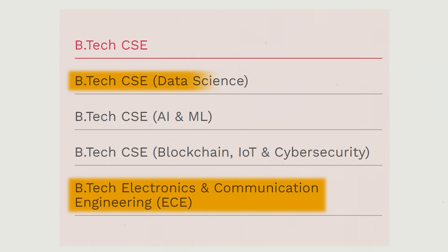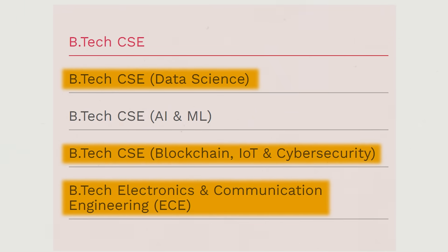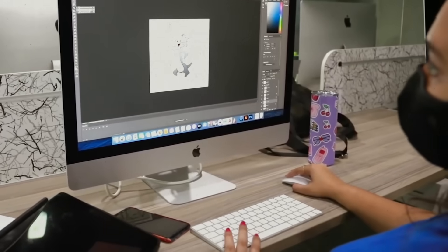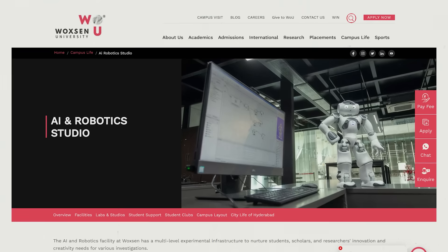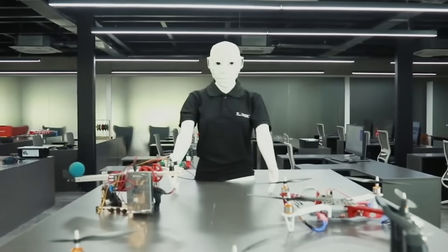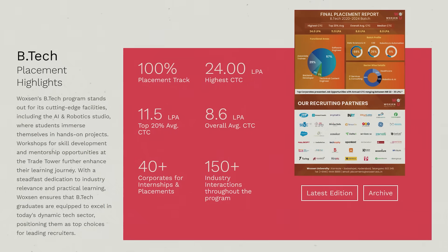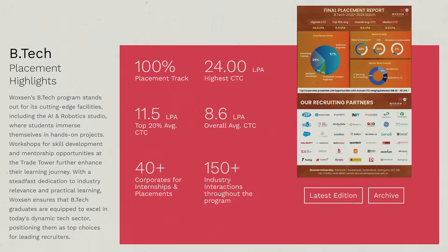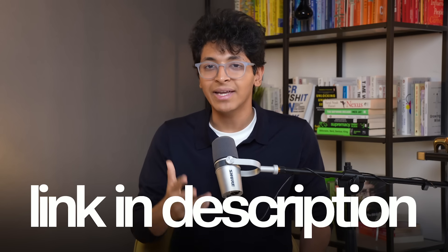In order for you to make the most out of these AI tools, you need to have a deeper understanding of technology, and the B-Tech programs at Voxone University might be what you're looking for. They offer the most industry-relevant B-Tech specializations like ECE and CSE in data science, IoT, blockchain, cybersecurity, and AI and ML. With 40% of the curriculum focused on practical learning, you will be working in high-tech labs and live industry projects. The curriculum is also designed in close collaboration with industry leaders. The part that stood out to me most was the AI and Robotics Studio, open 24/7 for everyone at Voxone University. With a 100% placement record and the highest CTC of 24 lakhs, it is one of the best private universities in India. You can learn more by checking the link in the description.